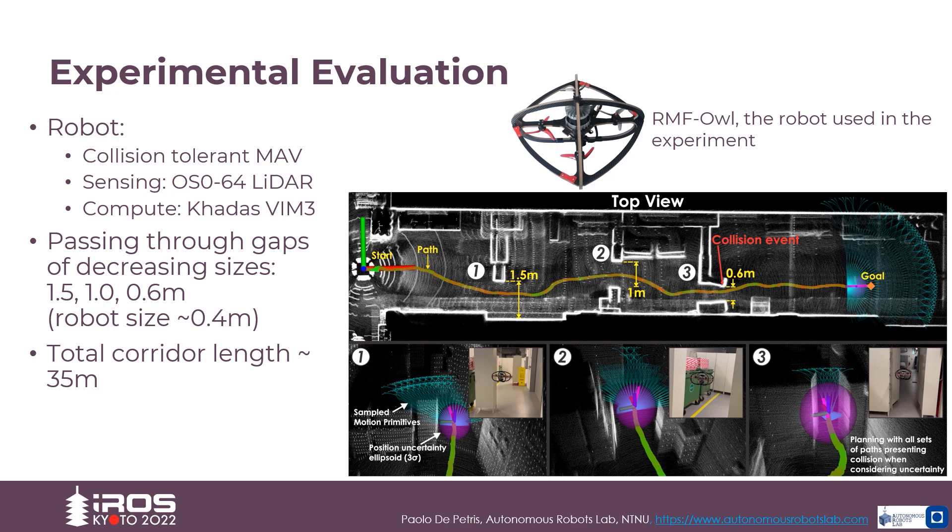For this experiment, we used two-step primitives and a total number of 888 possible motions. The average computational cost on the onboard computer of the RMF OWL is 350 milliseconds.